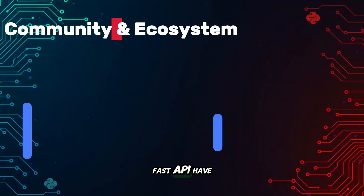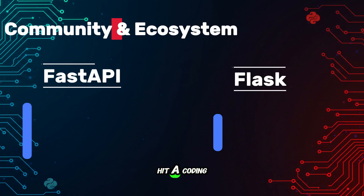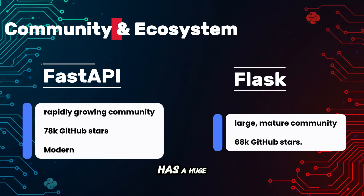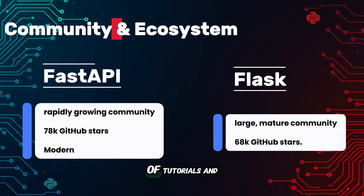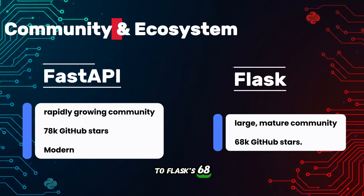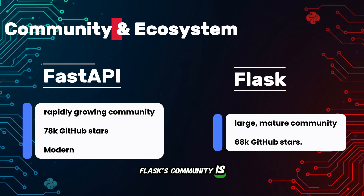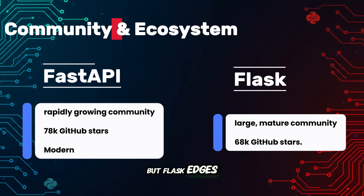Both Flask and FastAPI have massive communities, so you're never alone when you hit a coding roadblock. Flask, around since 2010, has a huge ecosystem with tons of extensions for things like authentication or database integration. Need a feature? There's probably a Flask package for it, plus a mountain of tutorials and Stack Overflow answers. FastAPI, though newer — launched in 2018 — is growing like wildfire with 78k GitHub stars compared to Flask's 68k. Its modern documentation and built-in tools, like automatic Swagger UI for testing APIs, make it a developer's dream. Flask's community is more established, but FastAPI's is catching up fast. Call it a tie — both have robust support, but Flask edges out for legacy resources, while FastAPI shines for modern workflows.